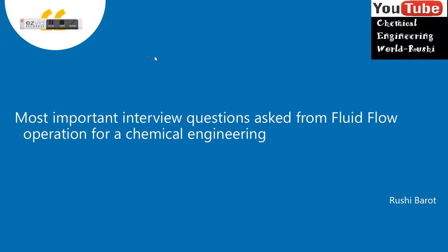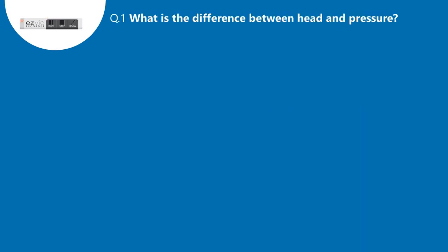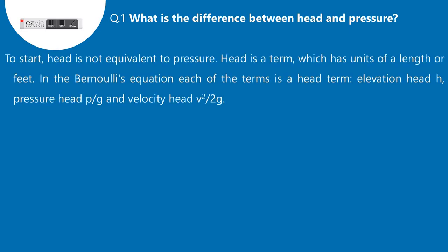Question 1: What is the difference between head and pressure? Head is not equivalent to pressure. Head is a term which has units of length or feet. In Bernoulli's equation, each of the terms is a head term: elevation head H, pressure head PG, and velocity head V²/2g.